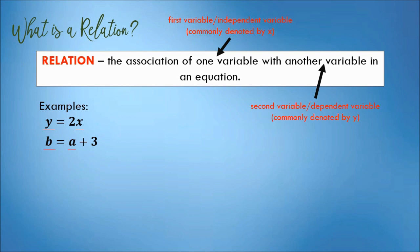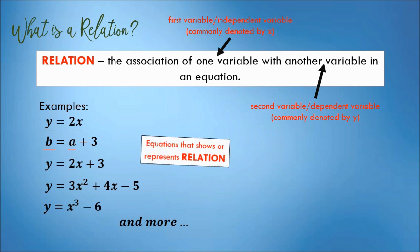Other examples of relation: a linear equation, y is equal to 2x plus 3; a quadratic equation, y is equal to 3x squared plus 4x minus 5; or y is equal to x cubed minus 6, and many more. They are all equations that represent a relation. They have one independent variable and one dependent variable associated with one another.